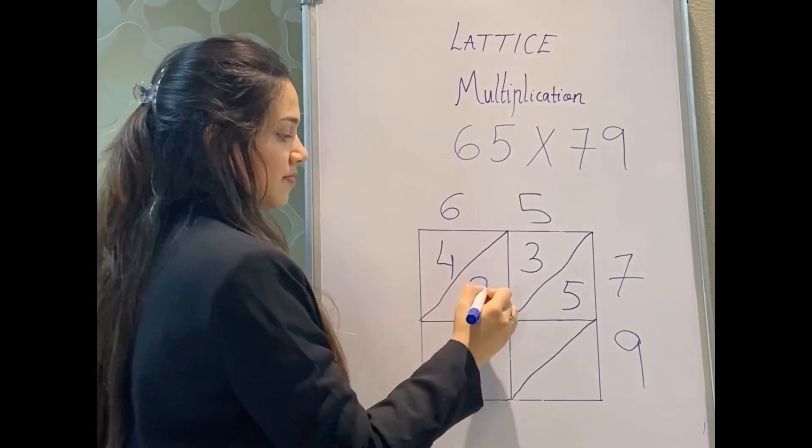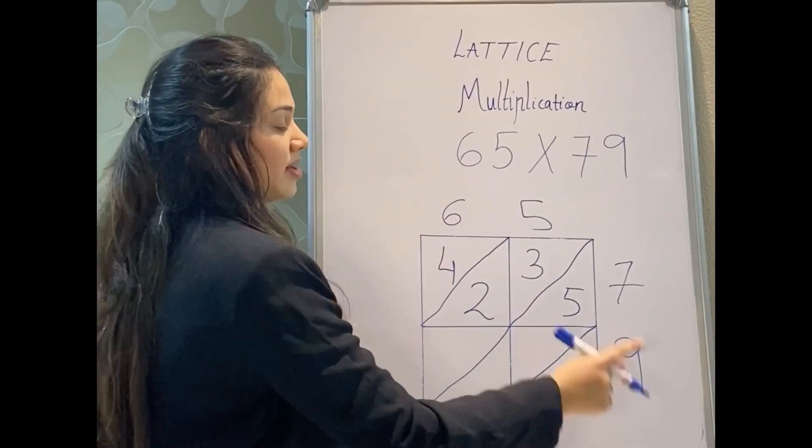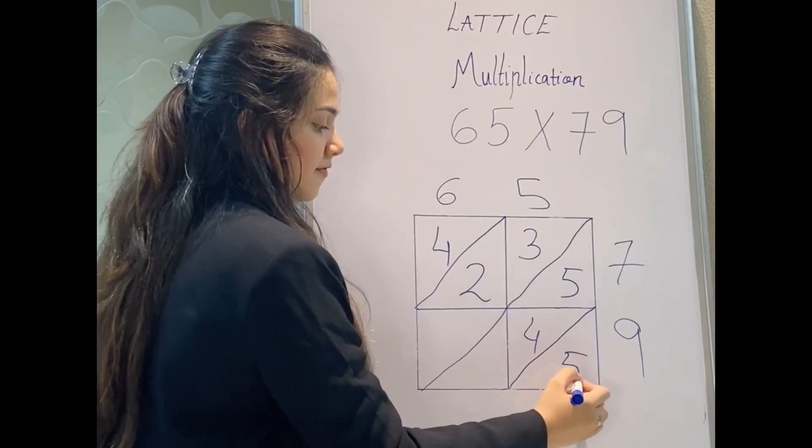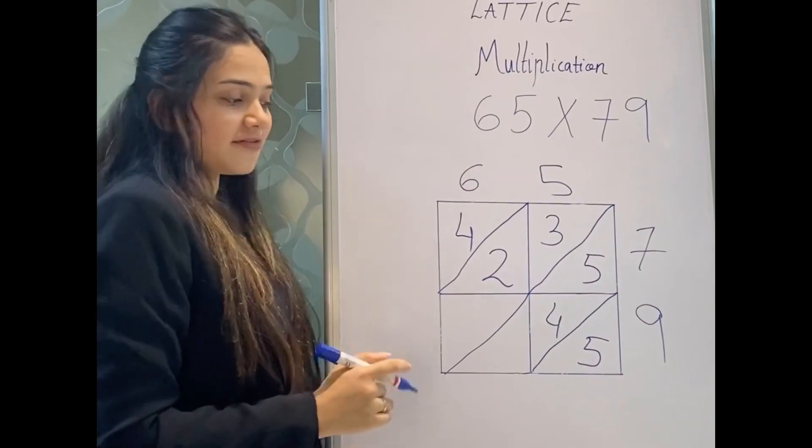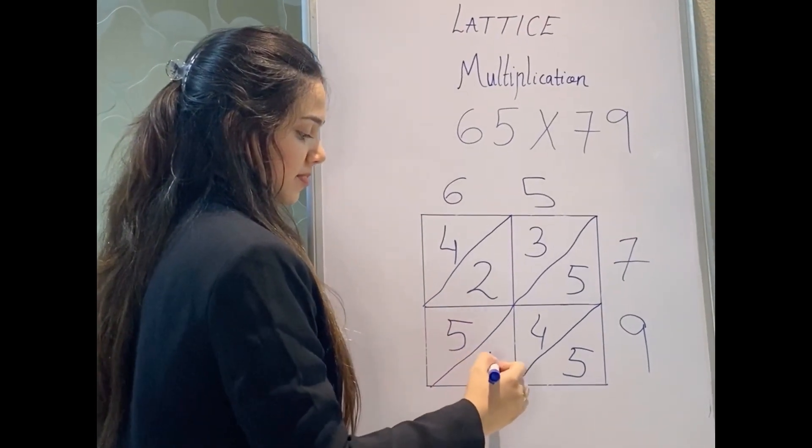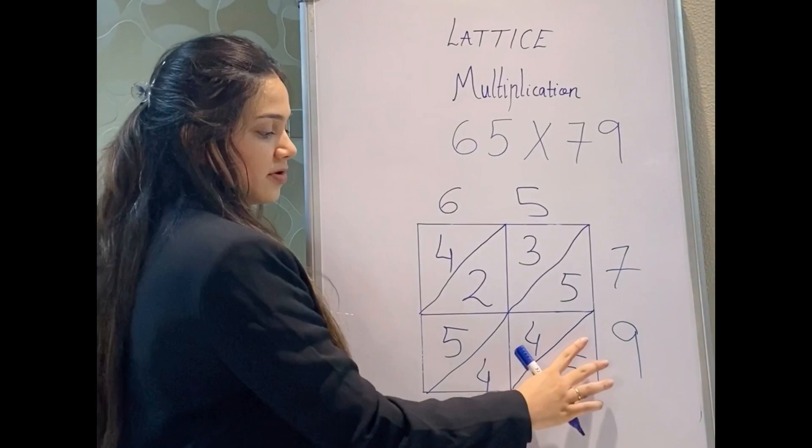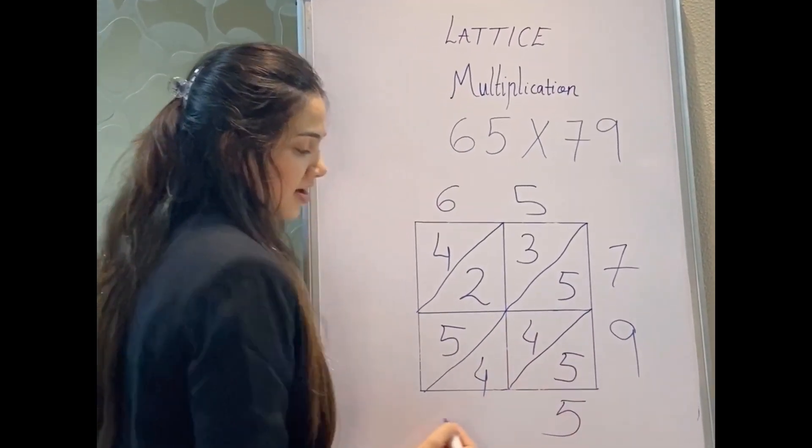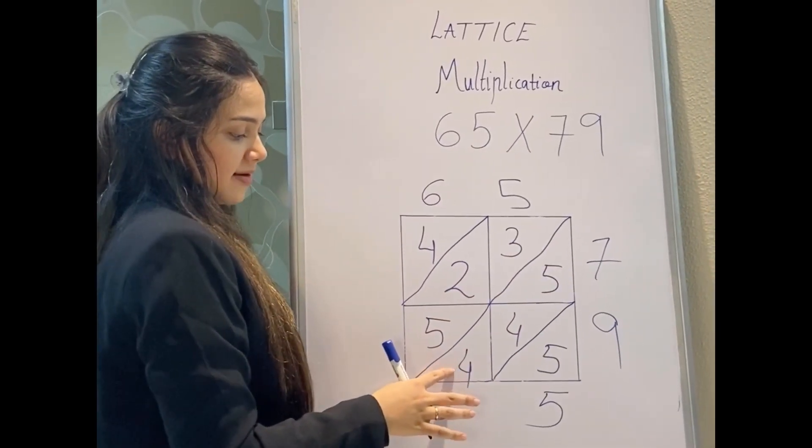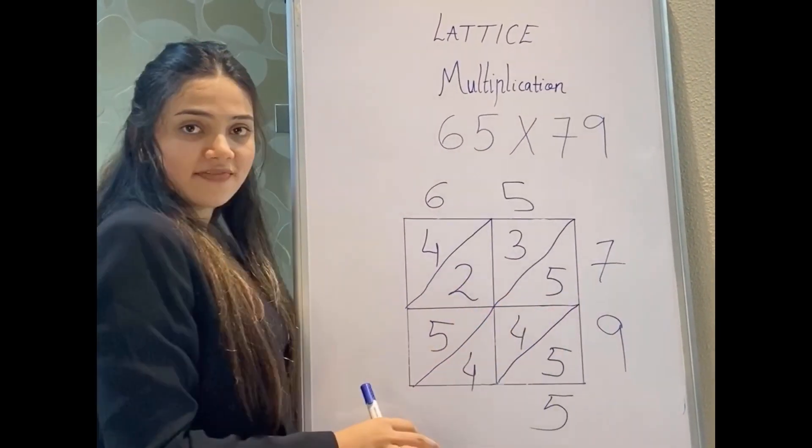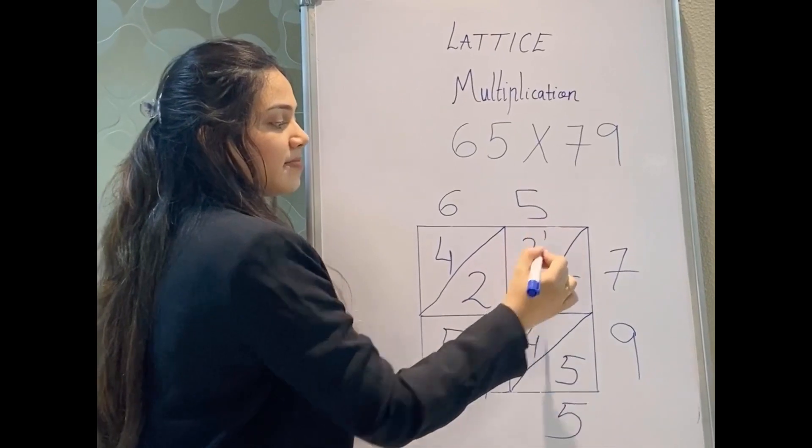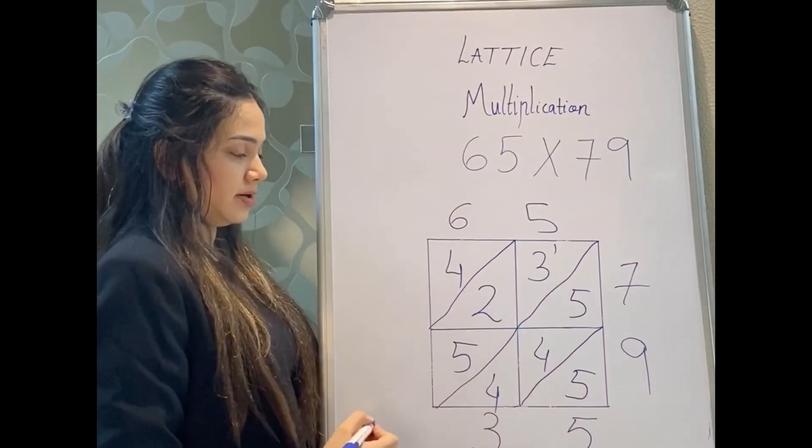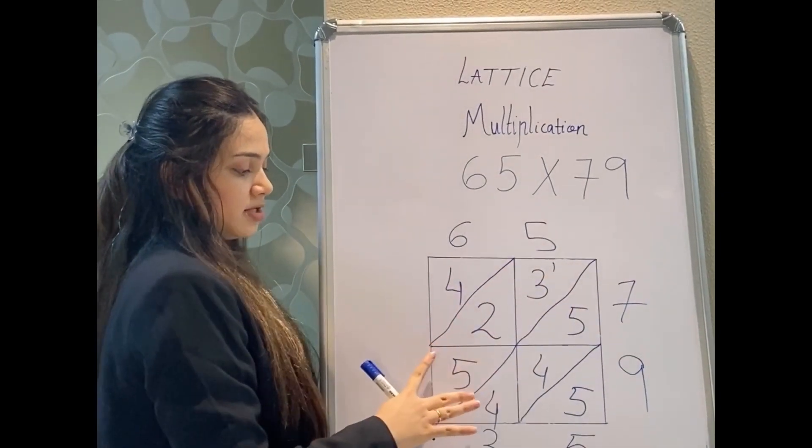Now 7 × 5 is 35, so I write 3 here, 5 here. 7 × 6 is 42, so I write 4 here and 2. 9 × 5 is 45. And 9 × 6 is 54. Now you'll take this number over here and just put it here. That's 5 over here. You have to add all these numbers: 4 + 4 = 8. 8 + 5 = 13. 1 will be carried here and you will write 3 over here.